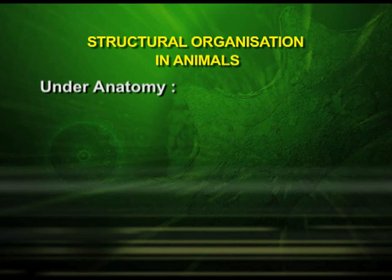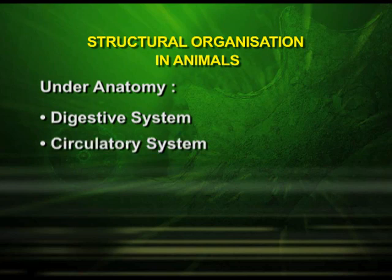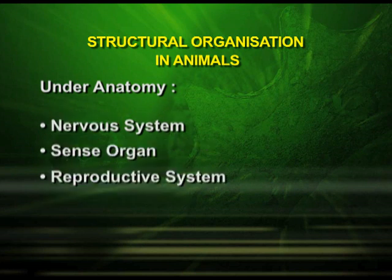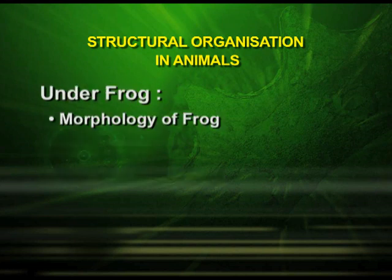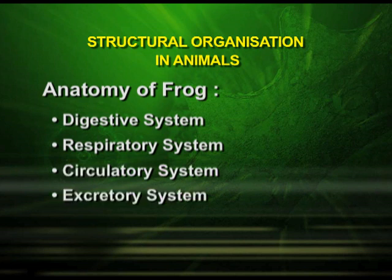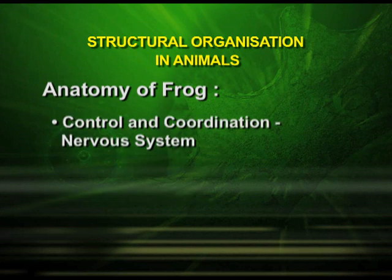Let us have a quick recap of the portion we studied in this episode. Under cockroach anatomy we studied the digestive system, circulatory system, respiratory system, excretory system, nervous system, sense organs and reproductive system. Under frog, we studied the morphology of frog, and under the anatomy of frog: the digestive system, respiratory system, circulatory system, excretory system, control and coordination — that is the nervous system, sense organs, the endocrine system and the reproductive system. We have seen in the structural organization in animals that though the organisms — earthworm, cockroach and frog — come under the animal kingdom, they have different body organization which differentiates them from each other.